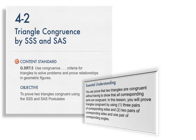The essential understanding: you can prove that two triangles are congruent without having to show that all corresponding parts are congruent. In this lesson, you will prove triangles congruent by using one, three pairs of corresponding sides, and two, two pairs of corresponding sides and one pair of corresponding angles.